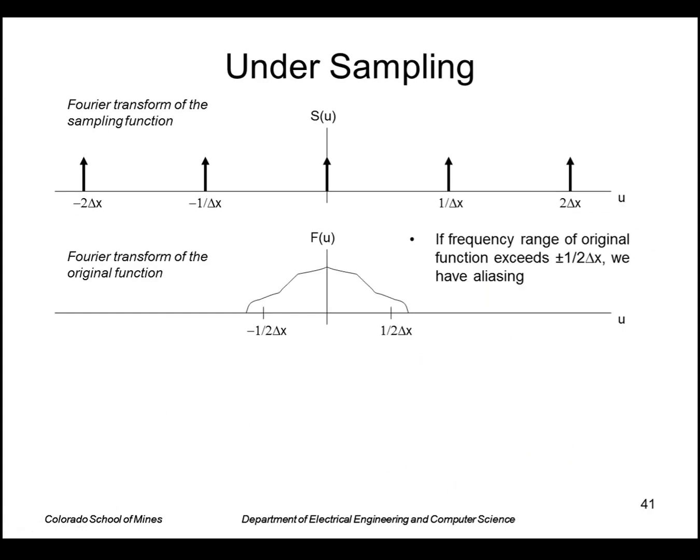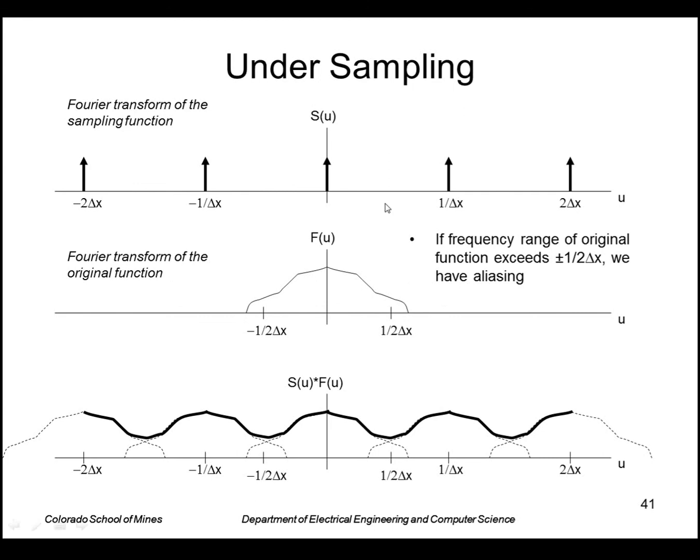All right. So now we can address what happens if you don't sample at a high enough rate. So this is our sampling function. Now let's say our image transform didn't go to zero so quickly. In fact, it was nonzero even past the halfway point here of 1 over 2 delta x. So this will cause problems when we reconstruct. So when we convolve the transform with our sampling function, namely we're sampling,